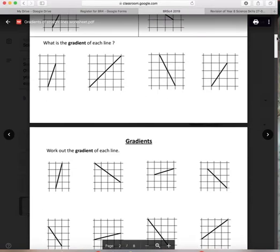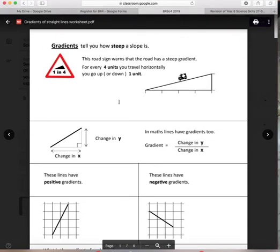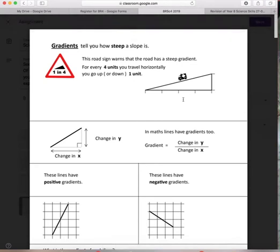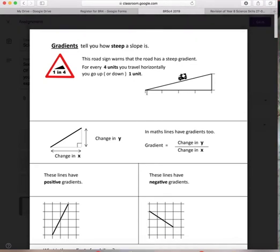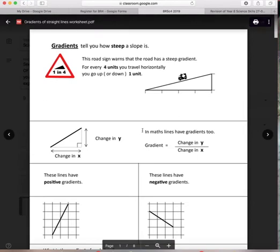So looking at gradients then, the gradient tells you how much your line goes up or down for every one unit you go across. So here this has gone up one unit and it's gone across one, two, three, four. So it's gone up one for every four across so it's one in four. Which is what that says.